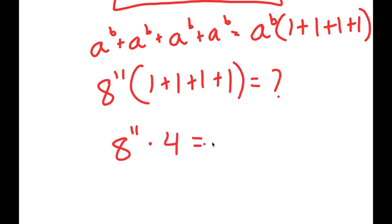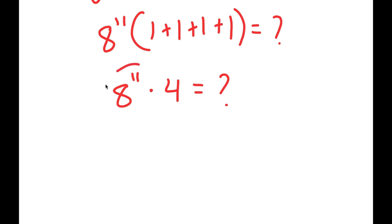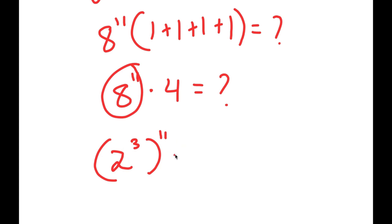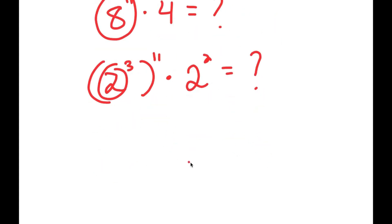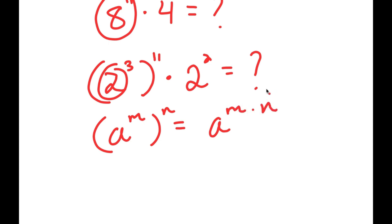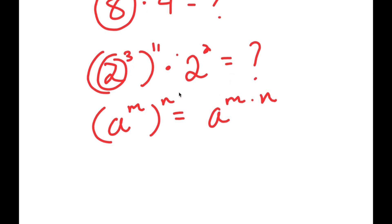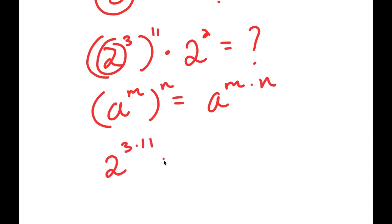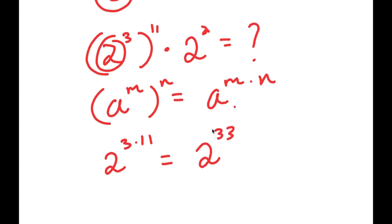From here, 8 to the power of 11 — I can rewrite 8 as 2 to the power of 3, so this becomes (2³)¹¹. And 4 I can rewrite as 2². Now, if I have something in the form (a^m)^n, this equals a^(m times n). So (2³)¹¹ equals 2^(3 times 11), which is 2^33, because 3 times 11 is 33.